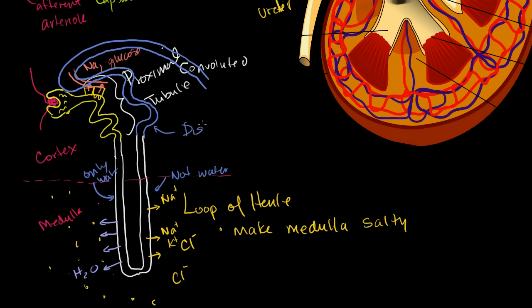In the distal convoluted tubule, we have more reabsorption — calcium, more sodium reabsorption. We're reabsorbing more things we didn't want to lose in the first place. We're also reabsorbing a little bit more water. By this point, the filtrate has been processed: a lot of the water has been taken out, it's more concentrated, and we've reabsorbed the salts, electrolytes, glucose, and amino acids we want.